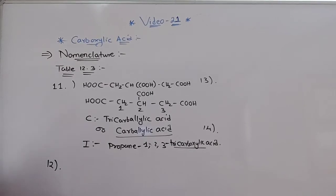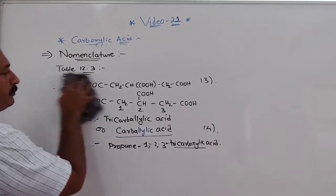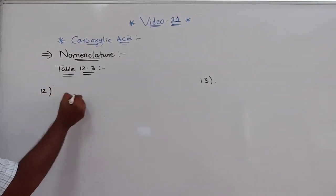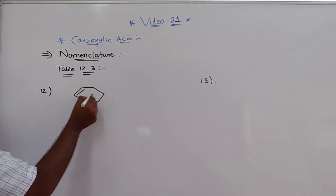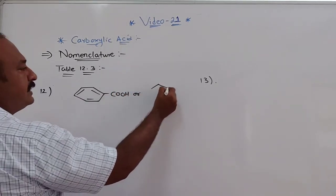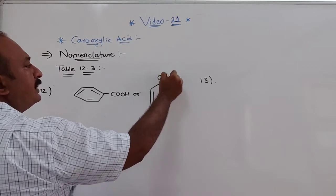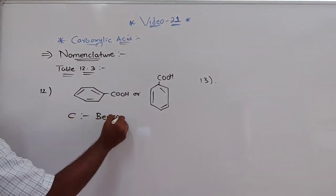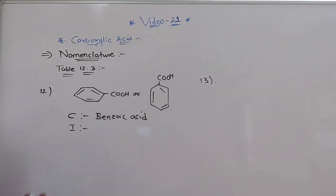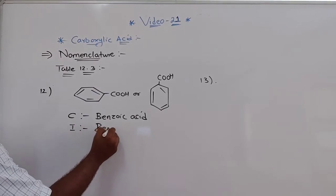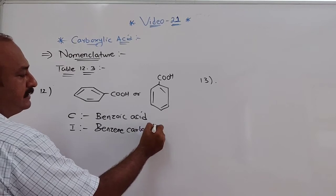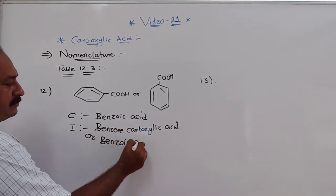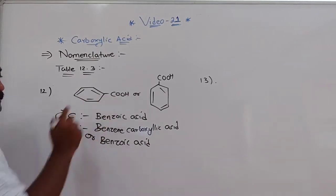The 12th example is also easy. It is a benzene ring with a COOH group attached. The common name is benzoic acid. For the IUPAC name, you can write benzenecarboxylic acid, or also benzoic acid — the common name and IUPAC name are the same in this type of structure.